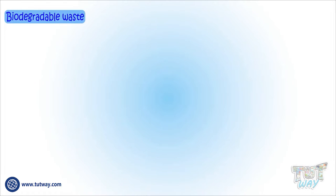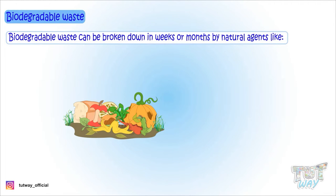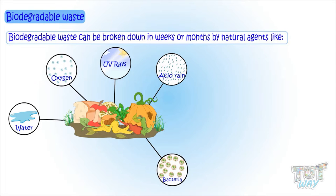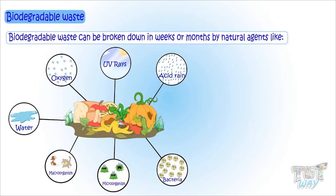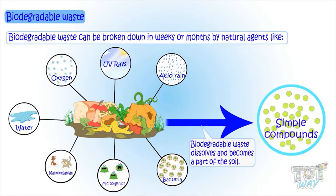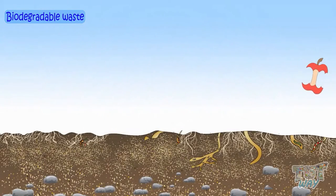Biodegradable waste is waste material that can be broken down in weeks or months by natural agents like water, oxygen, UV rays of the sun, acid rain, bacteria, and other micro and macro organisms into very simple compounds — they dissolve and ultimately become part of the soil.